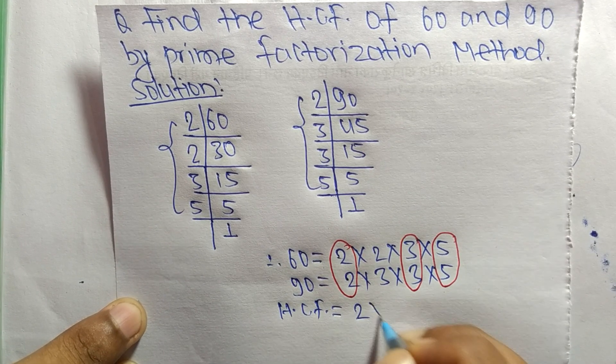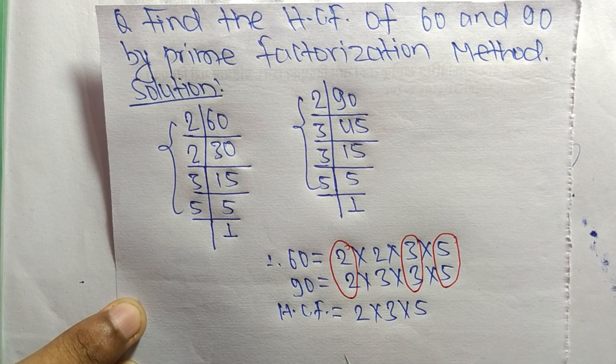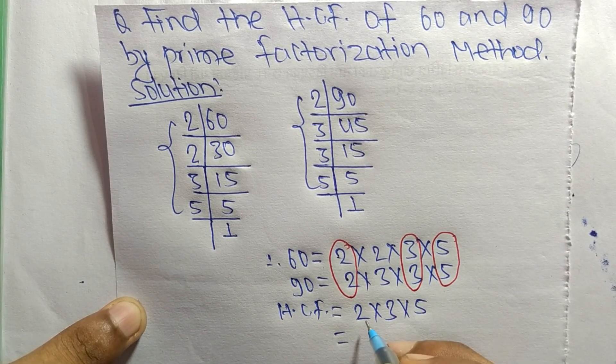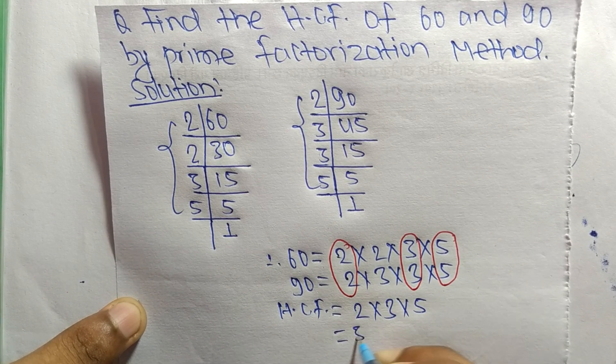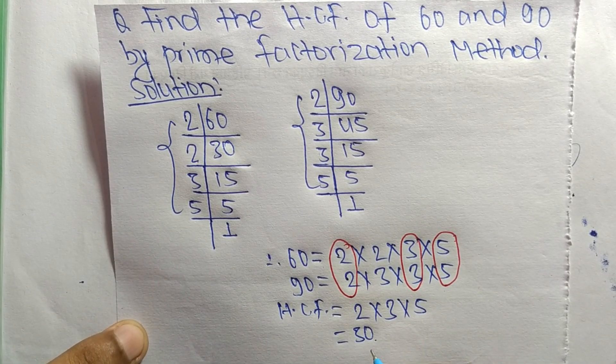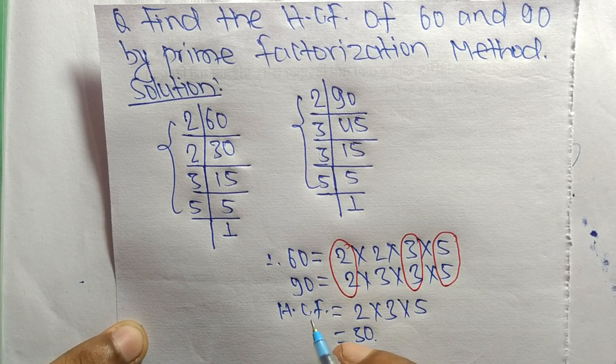These are common factors. So it is 2 times 3 equals 6, and 6 times 5 equals 30. So 30 is the HCF of 60 and 90.